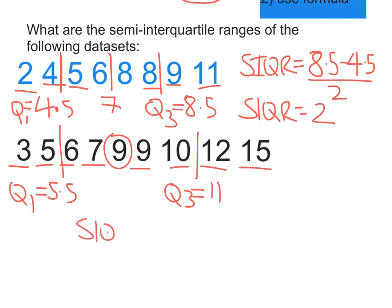Our semi-interquartile range is Q3, which is 11, take away Q1, which is 5.5, all over 2. 11 take away 5.5 is 5.5. Divide that by 2 is 2.75.